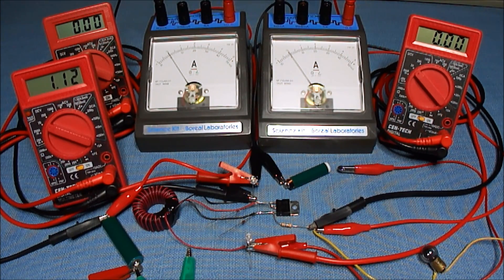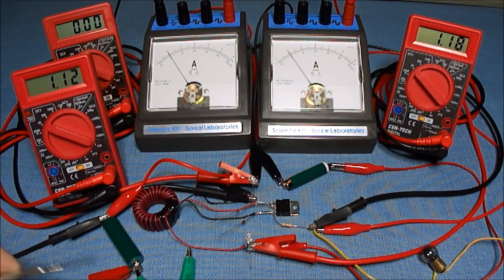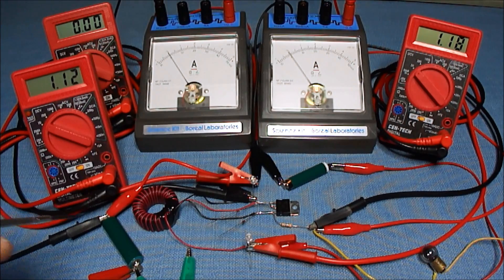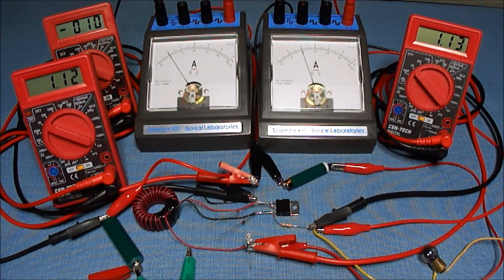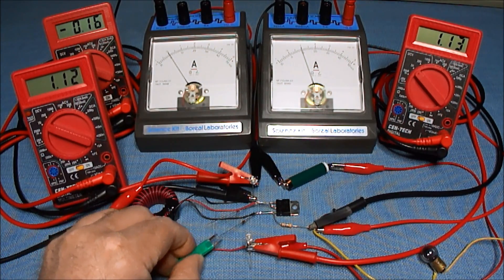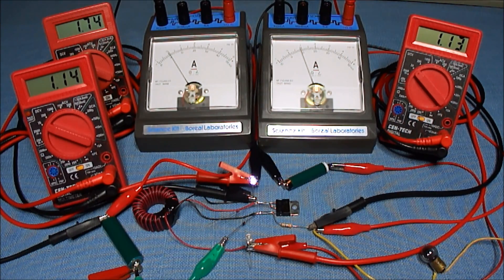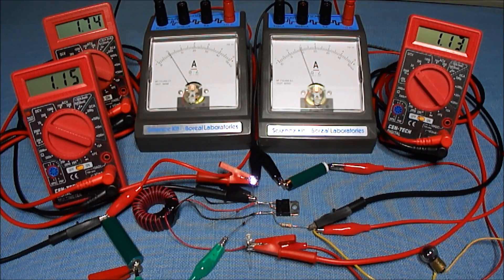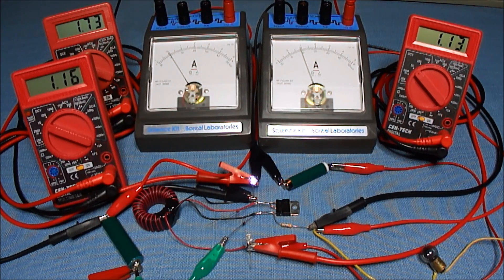So first we'll start off with the base to emitter connection, which is version 2. And it's running about a little less than 9 milliamps going in. And there's 1 milliamp going through the LED.